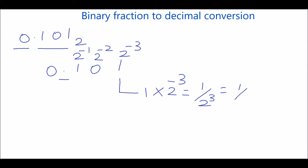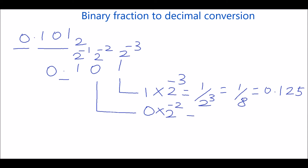The weight associated with this digit is 2 power minus 3, so 1 divided by 2 power 3, that is 1 by 8, which is 0.125. Then take the next digit, 0. The weight associated with this digit is 2 power minus 2, so anything multiplied by 0 is 0.